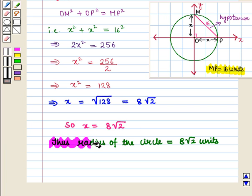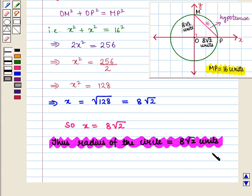Thus radius of the circle will be equal to 8 square root of 2 units. Which is the required answer. This completes our session. Hope you have enjoyed this session.